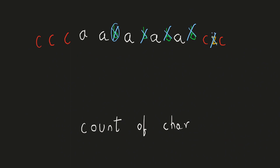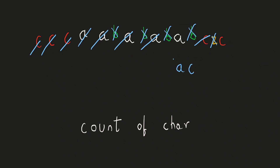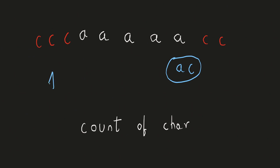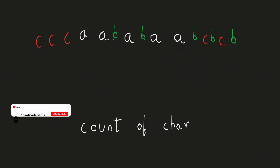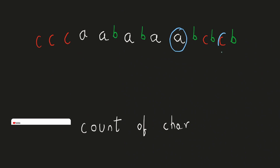We ignore B and Z since they can never be part of the final string. When we apply the operation the first time, the first occurrence of C and A are deleted. The second time, the second C and second A are deleted. The third time, the third C and third A are deleted. The fourth time, the fourth A and fourth C are deleted. The fifth operation would result in an empty string, so the string just before that — containing the last A and last C — is our answer. Only the last occurrence of each max-frequency character will remain.